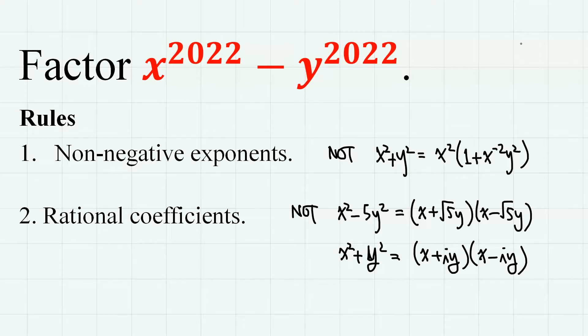Here we are going to factor one more polynomial in that form, and that is x to the power of 2022 minus y to the power of 2022. Just like my previous videos, I am going to use only non-negative exponents, and I will limit the coefficients to rational numbers, meaning not containing any irrational or imaginary numbers.